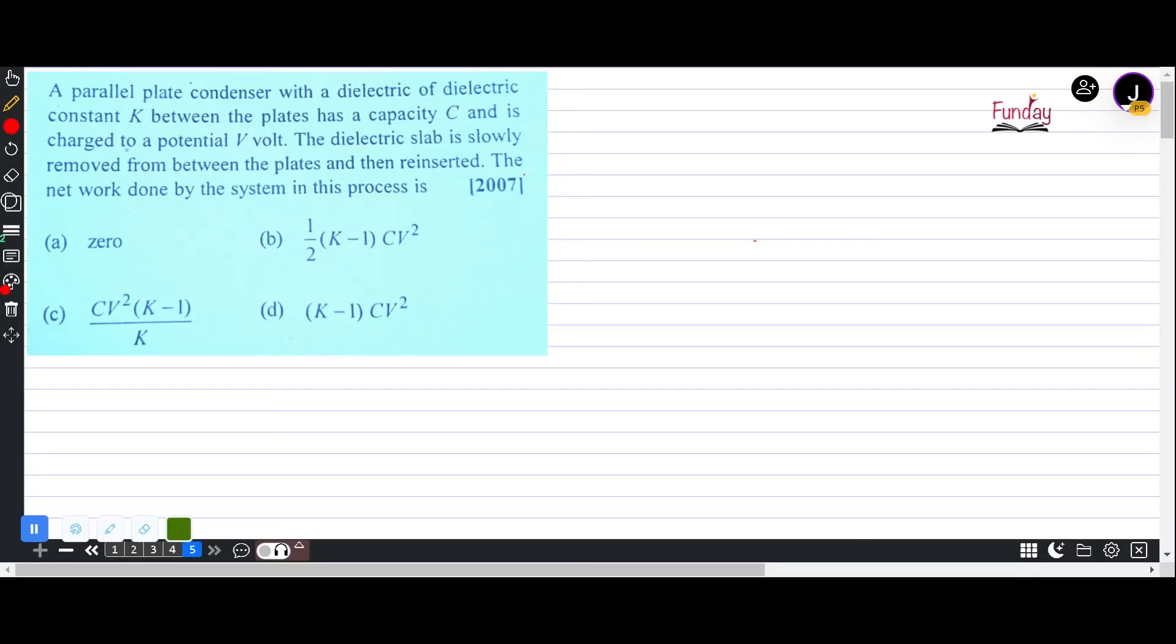In this question we have a parallel plate condenser with a dielectric of dielectric constant K which has a capacity C and is charged to potential V. The slab is slowly removed from between the plates and then reinserted. The network done by the system in this process is...